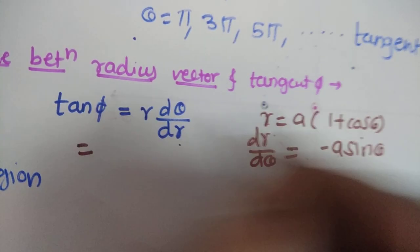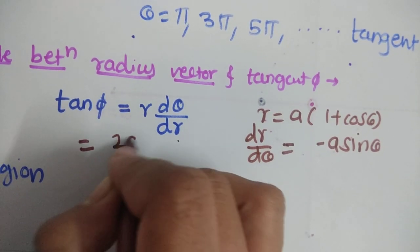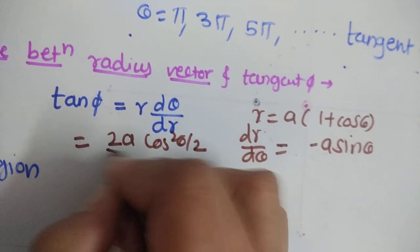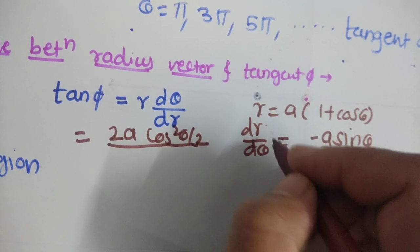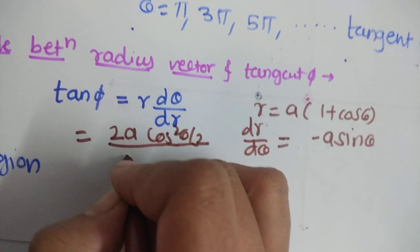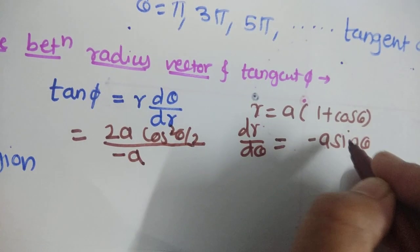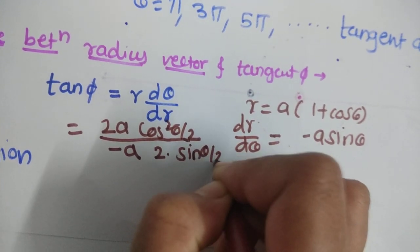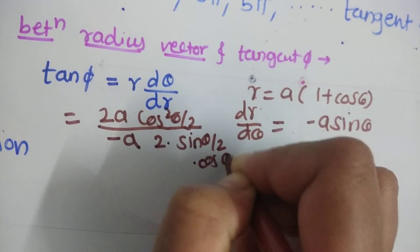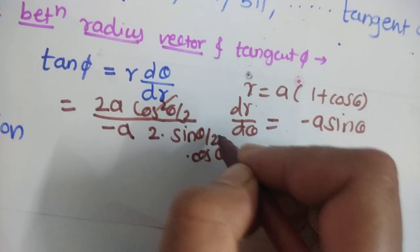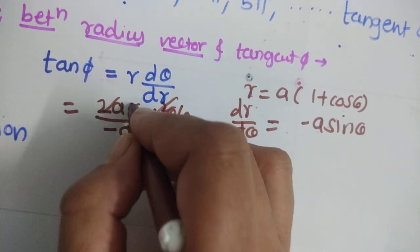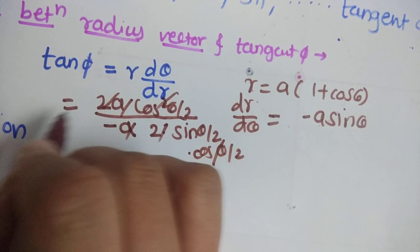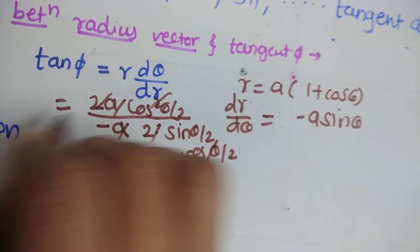We can write a(1 + cos θ) as 2a cos²(θ/2), and sin θ as 2 sin(θ/2) cos(θ/2). After cancellation of the 2a and one cos(θ/2) factor, we obtain the simplified expression for tan φ.